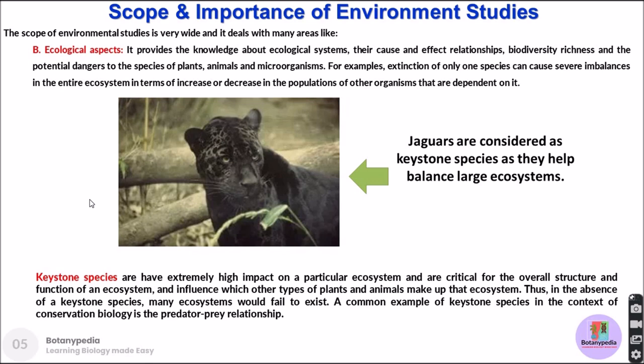For example, if you remove all the tigers or lions from a particular forest, it will lead to an increase in the population of deer, which will eventually eat up all the grass and convert a forest into a desert. To prevent that from happening, proper knowledge and understanding of the population dynamics of each and every species in the environment is very important.